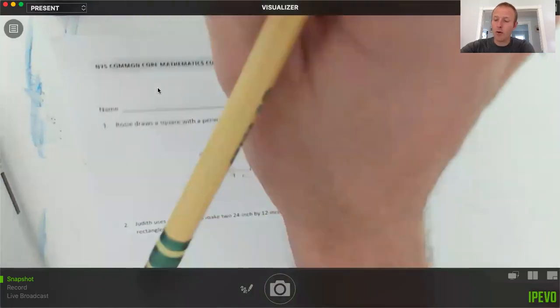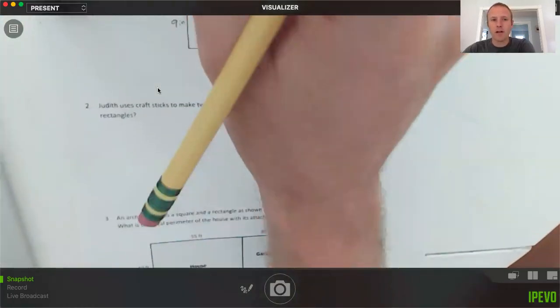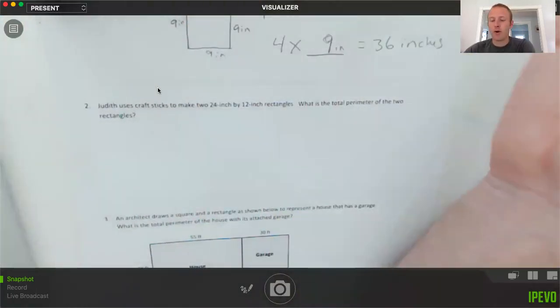Since it told us a square, I really can only label one side and we can imply that the rest were also nine inches. Alright, let's move on to number two. That one was pretty straightforward, a one step problem. All you had to understand is that a square had equal sides. That's basically what that problem is asking you to do.